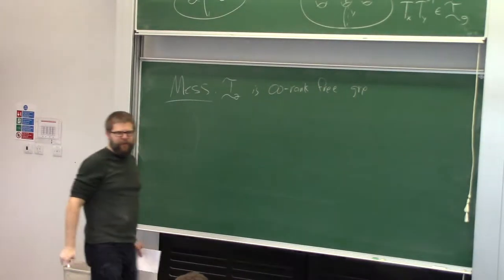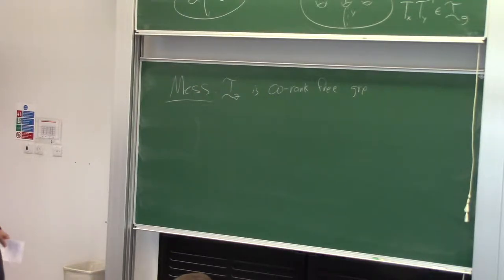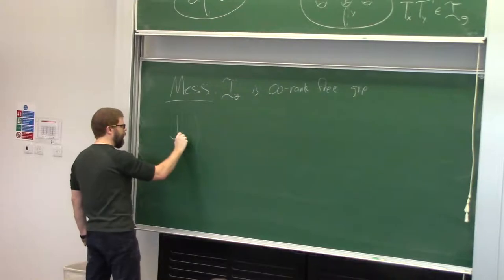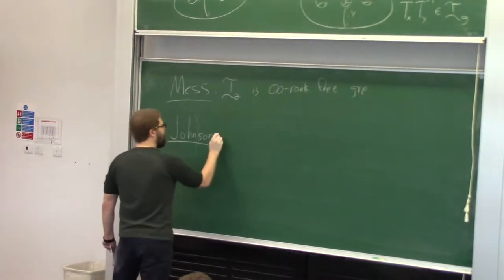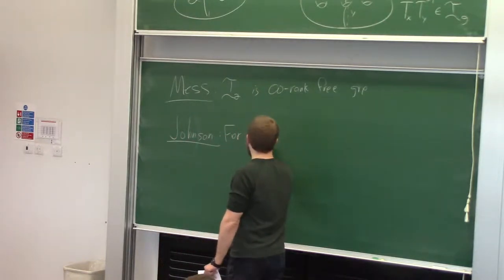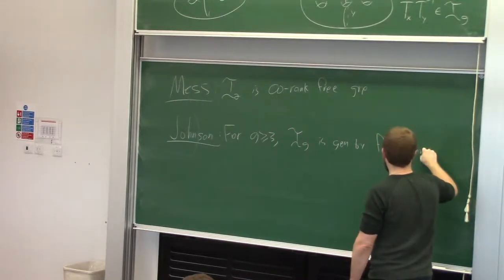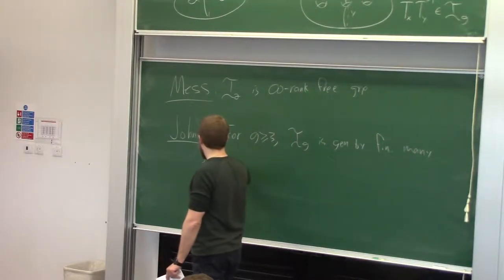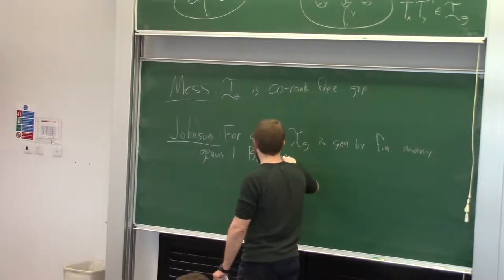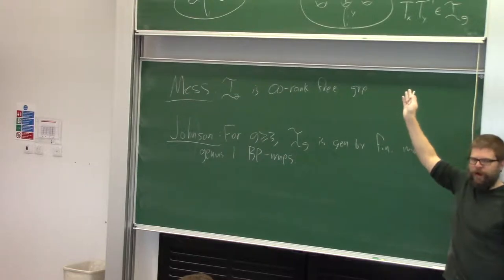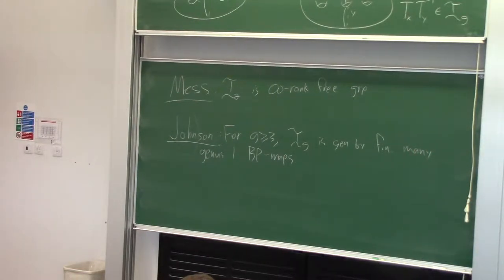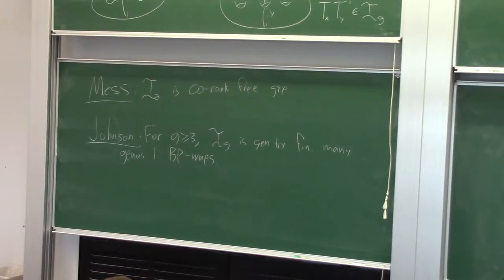That's a pretty big, pretty bad group. You might think maybe it just gets worse as the genus increases. But in fact we have the following remarkable theorem of Dennis Johnson, which is in contrast to that: for g at least 3, Torelli_g is generated by finitely many genus-1 BP maps. Genus-1 here refers to the fact that on one of the two sides there's a genus-1 surface. This is a remarkable theorem — there's basically still only one proof of it known, and that proof gives no insight into why it's true. I think it's just a magic theorem.